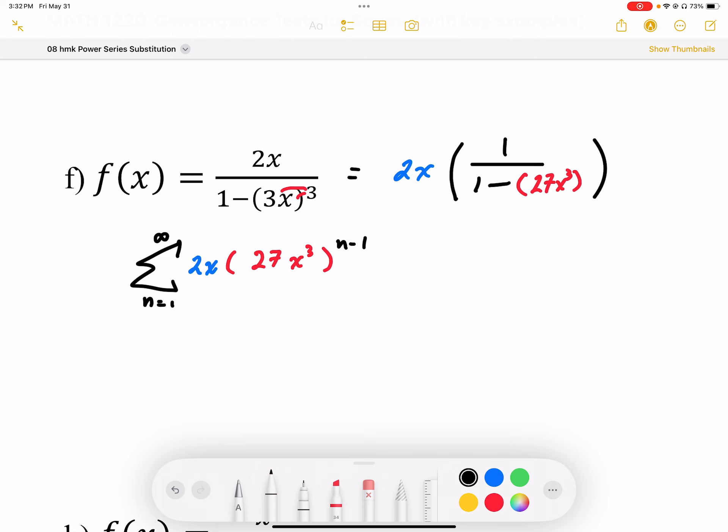So I can simplify that expression. I'm going to separate out my 2 and my 27 to the power of n minus 1, and then I have x to the power of 3n minus 1, and then I have that extra factor of x.